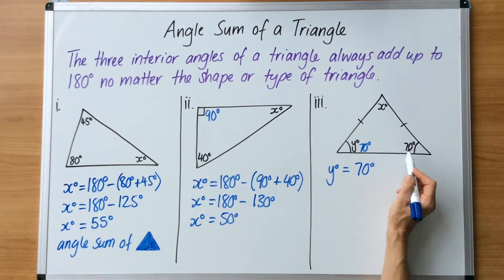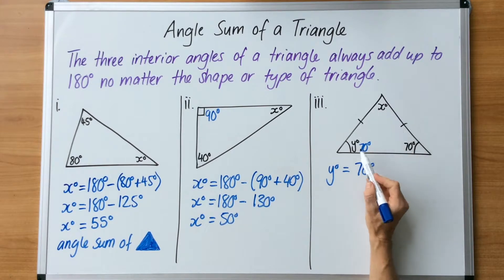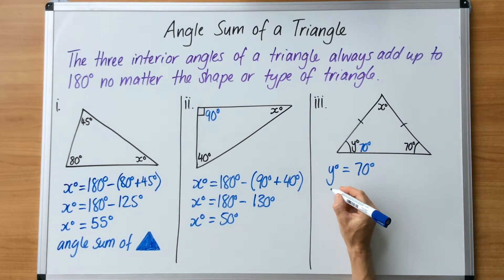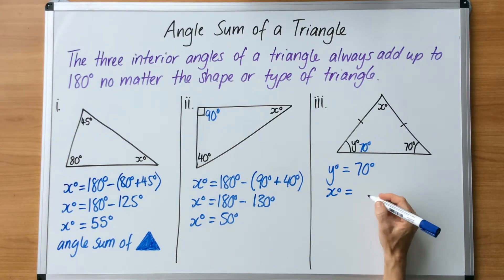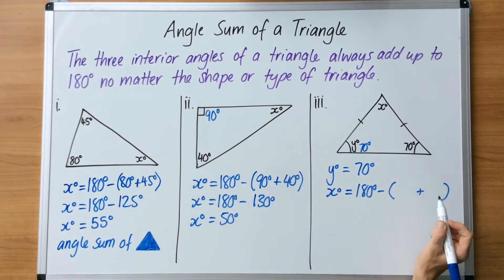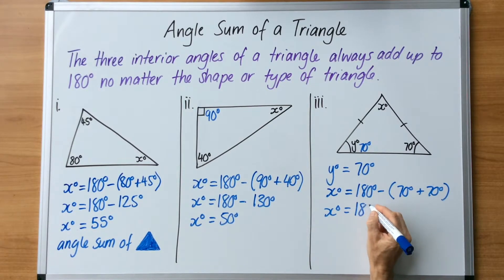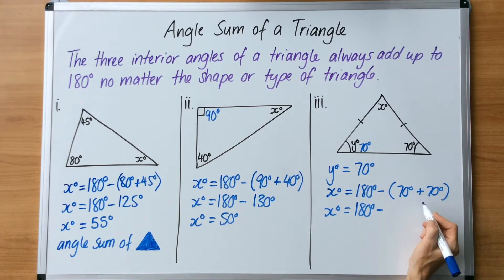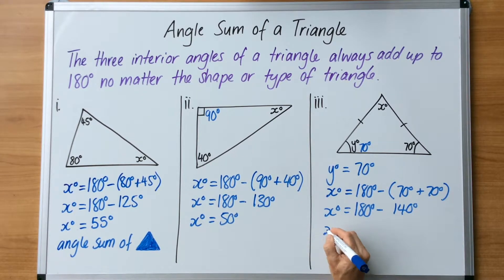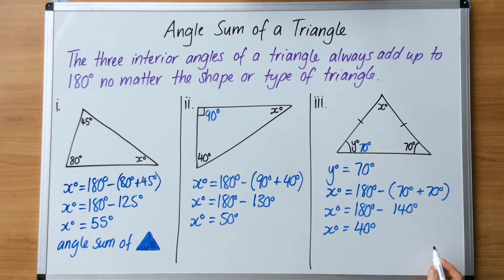Now I can solve x because I have the two other angles given to me. If I don't have that angle, I can't solve this — that's why I had to solve y first. x equals 180 minus, and now we continue with the angle sum of a triangle. We've got a 70 and a 70, so those go in the brackets. 180 minus the sum of those, which is 140 degrees. 180 minus 140 degrees is 40 degrees. So that missing angle is 40 degrees, and I would write angle sum of a triangle at the bottom.